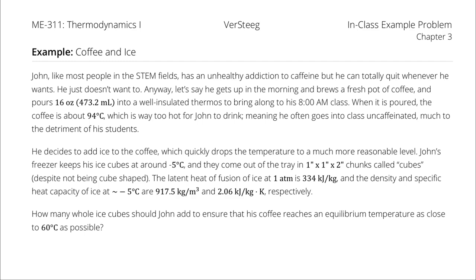The latent heat of fusion of ice at 1 atmosphere is 334 kilojoules per kilogram, and the density and specific heat capacity of ice at negative 5 degrees Celsius are 917.5 kilograms per cubic meter and 2.06 kilojoules per kilogram kelvin, respectively. How many whole ice cubes should John add to ensure that his coffee reaches an equilibrium temperature as close to 60 degrees Celsius as possible?